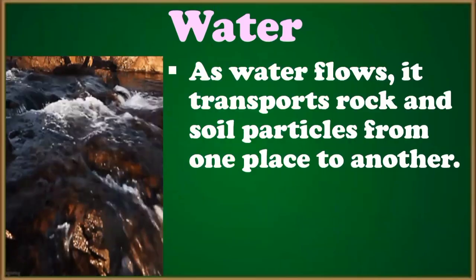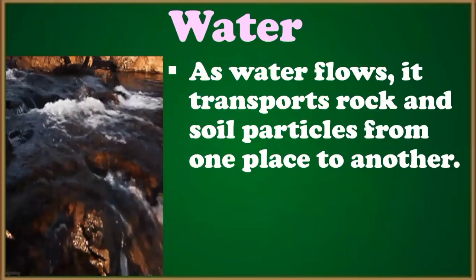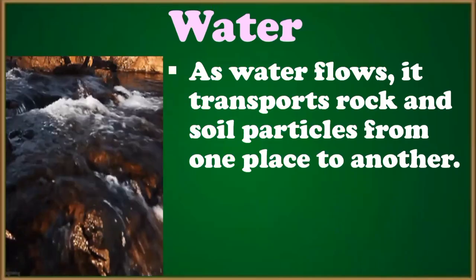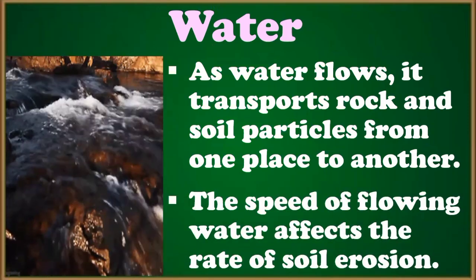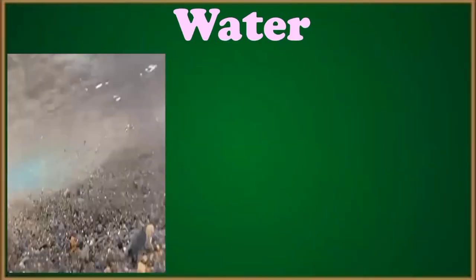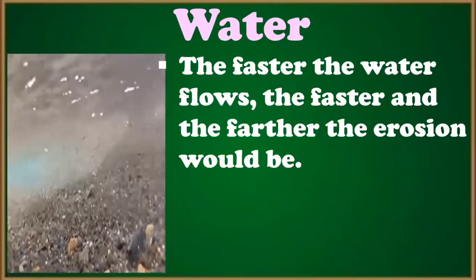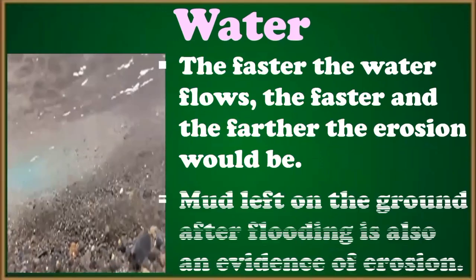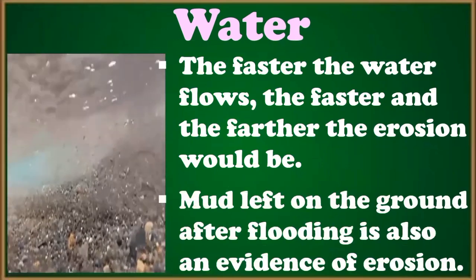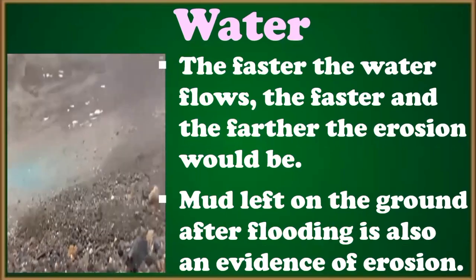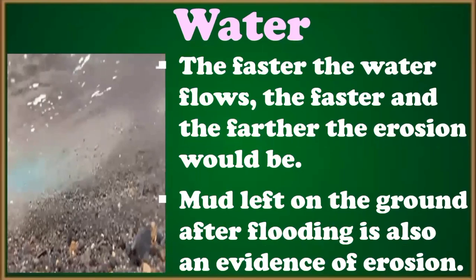Let's talk first about water. As the water flows, it transports rock and soil particles from one place to another. The speed of flowing water affects the rate of soil erosion. The faster the water flows, the faster and the farther the erosion would be. Mud left on the ground after flooding is also evidence of erosion.